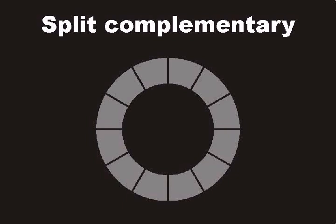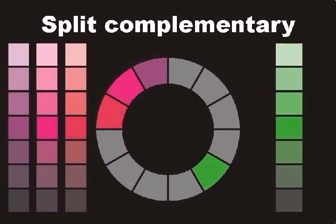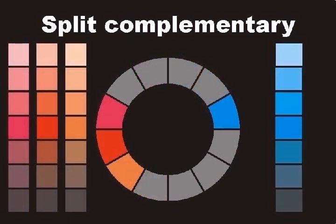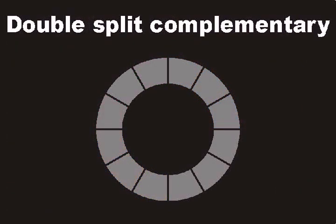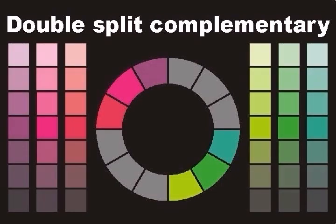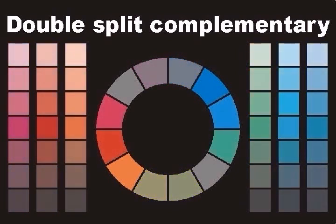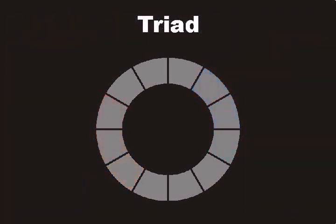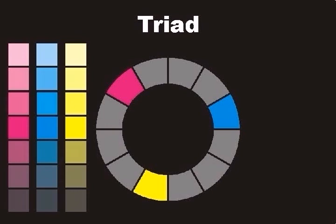A split complementary color scheme includes an analogous color scheme, plus the complementary color with its tints and shades, plus colors that are adjacent to the complementary color on the hue scale, along with the tints and shades of all of these colors. A triad color scheme includes three colors that are equally spaced on the hue scale, plus the tints and shades of each.